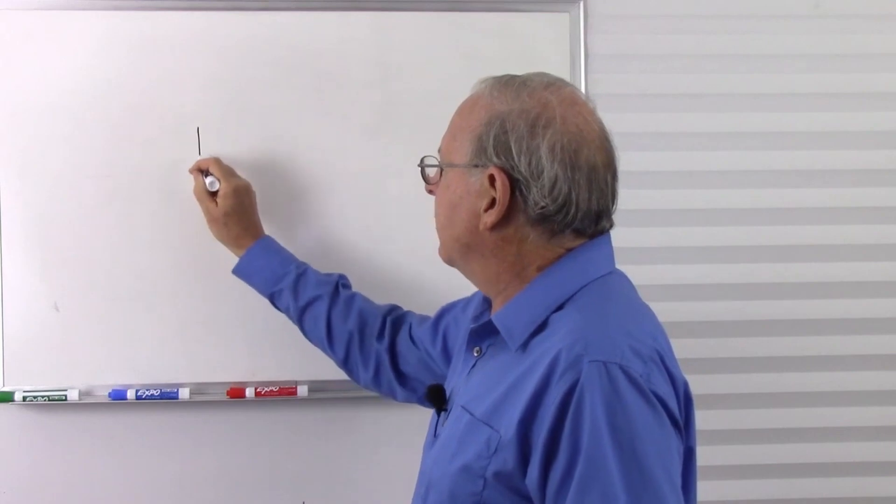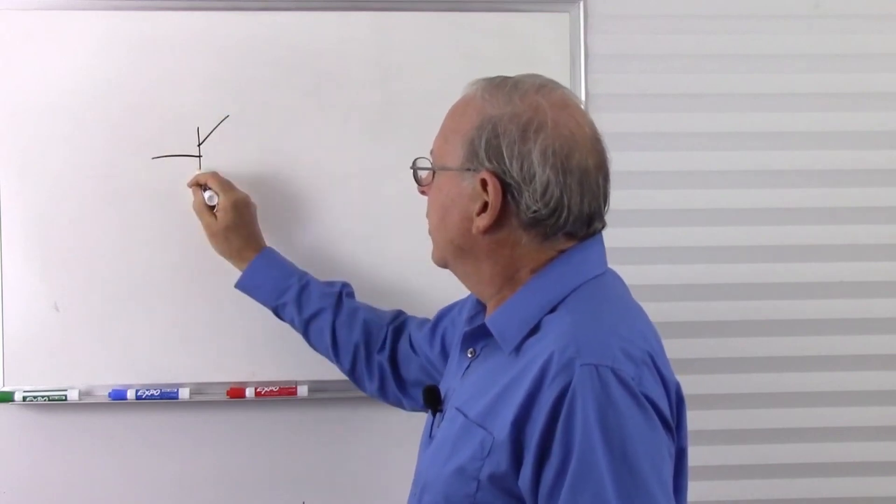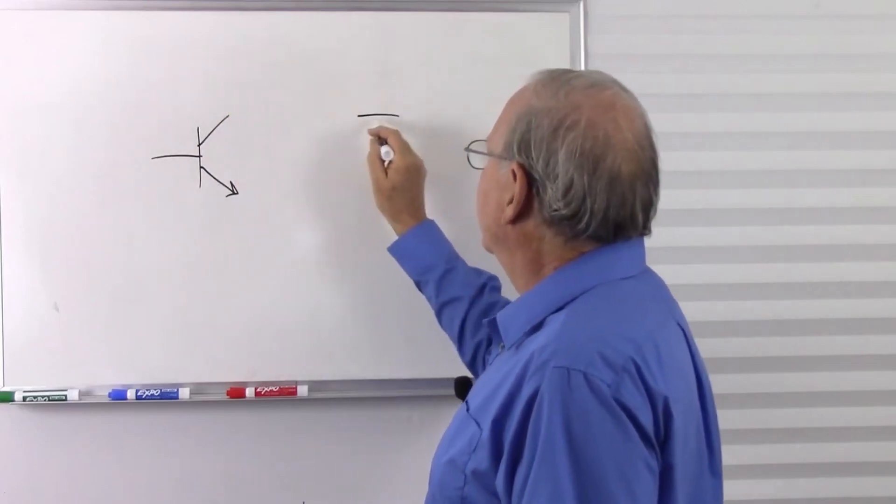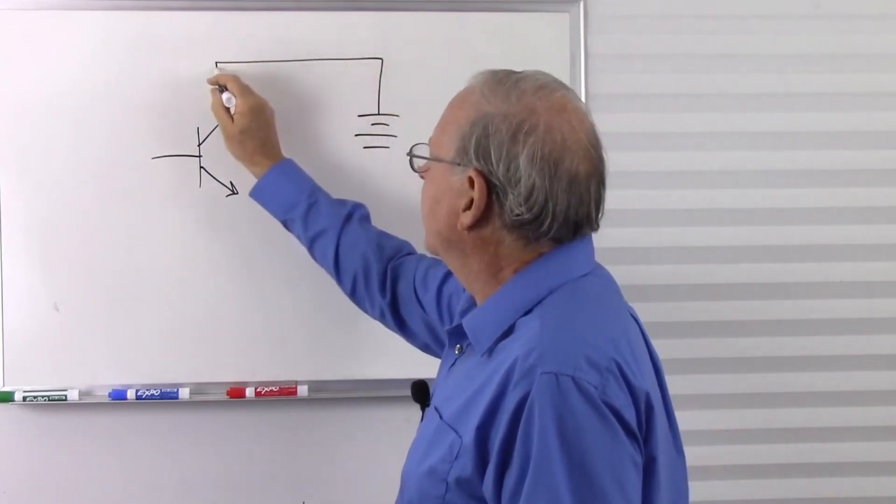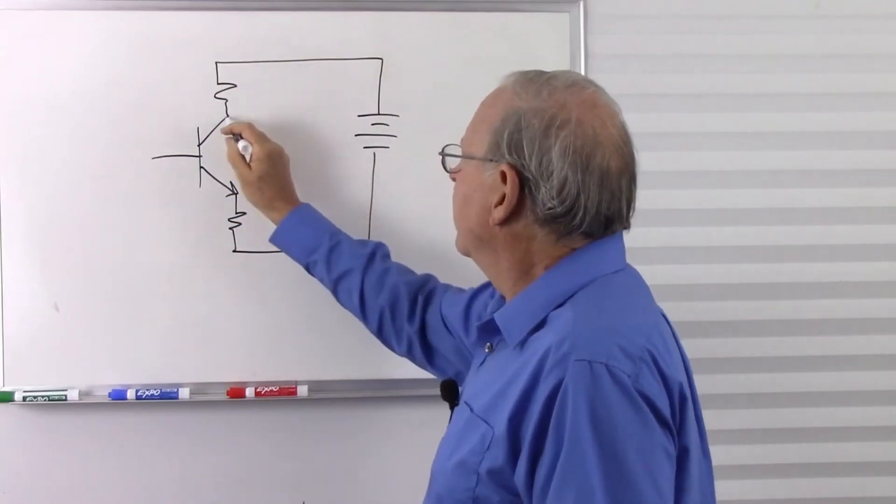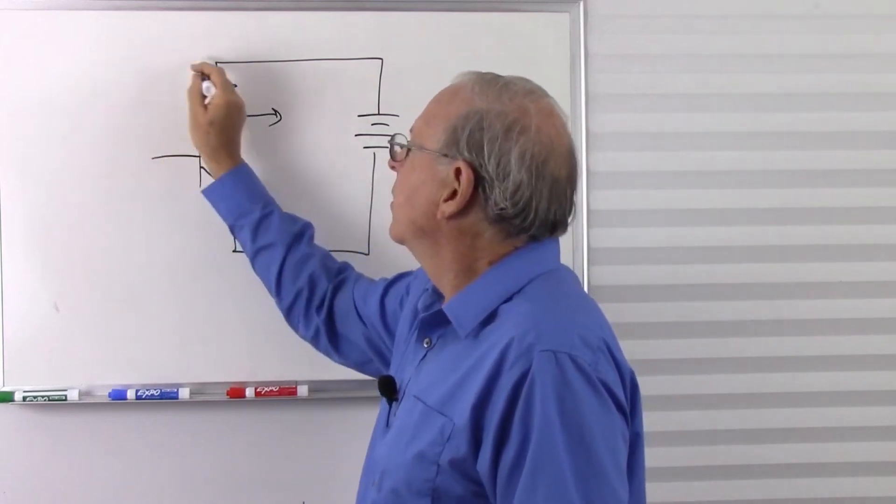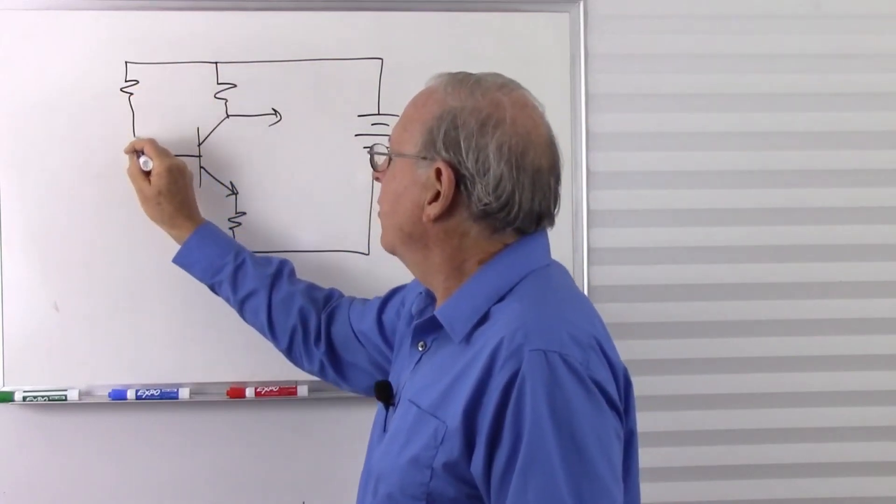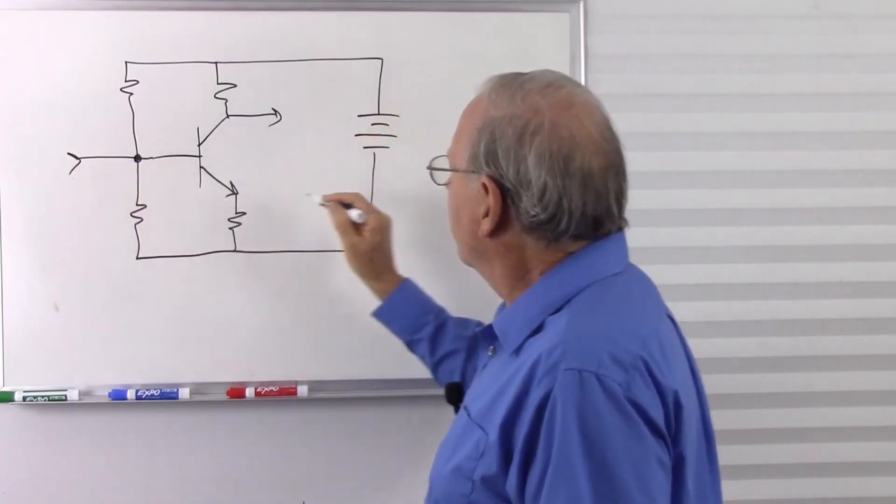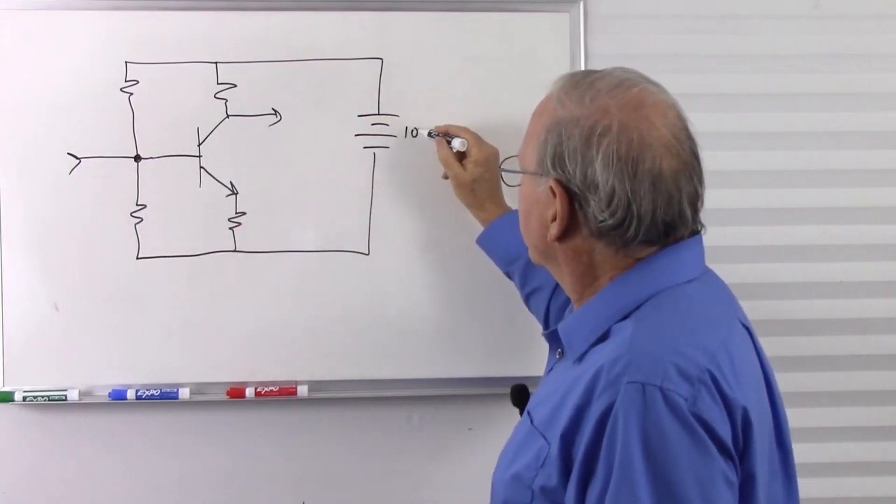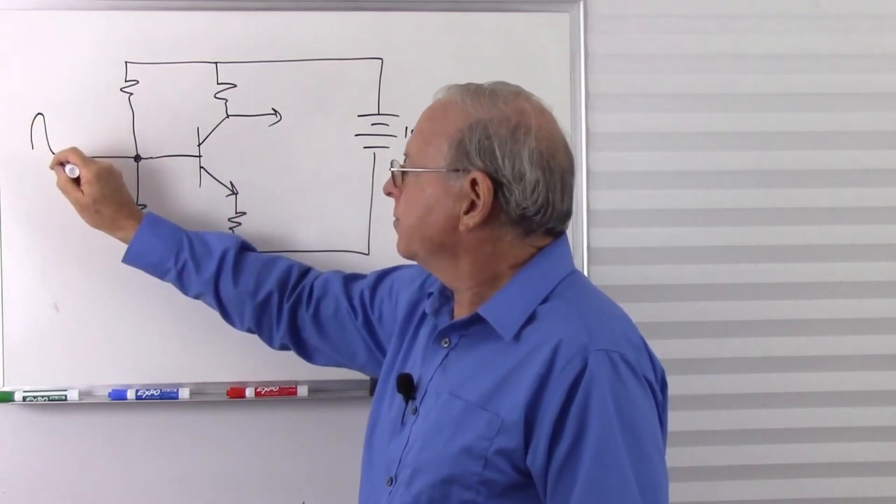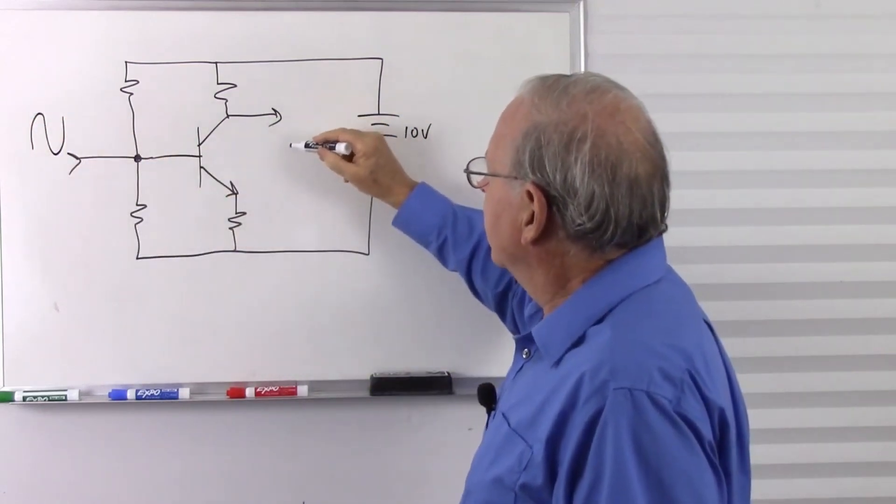If we take a look at our small signal amplifier, so here is our NPN transistor, and we have a power supply over here, collector resistor. I'll put an emitter resistor in here because I can, there's our output, and here is our bias resistors here, and an input. So, let's put 10 volts here because we can.